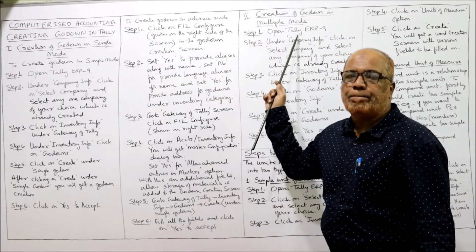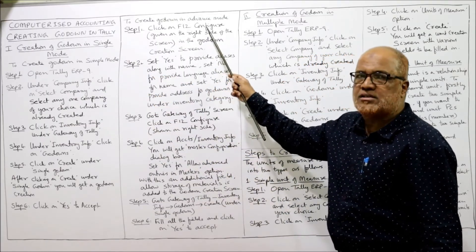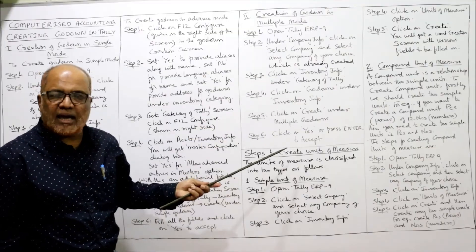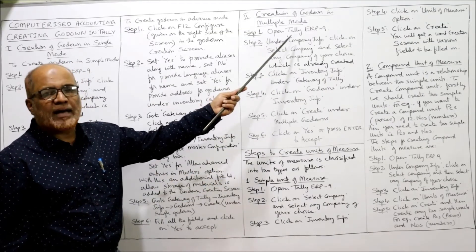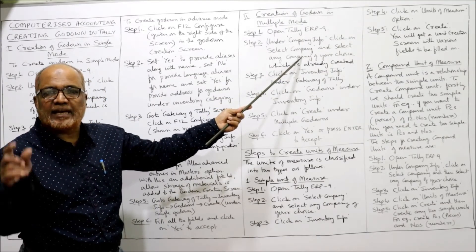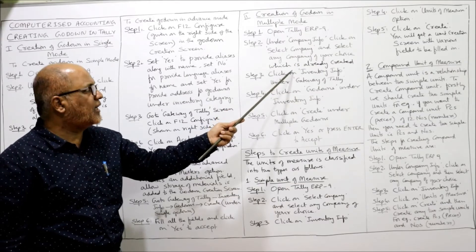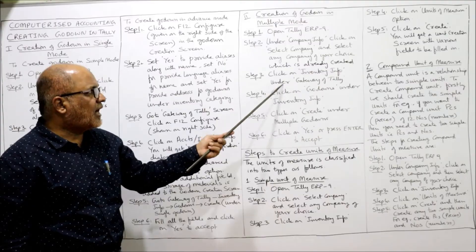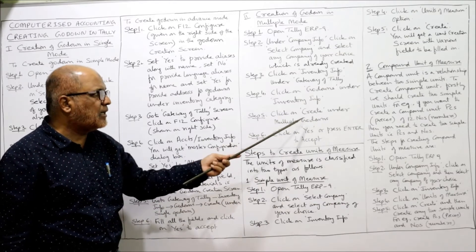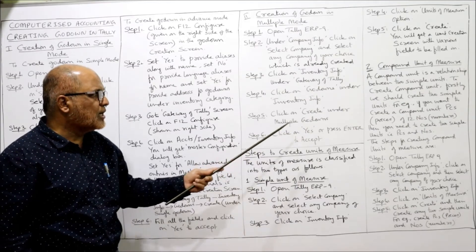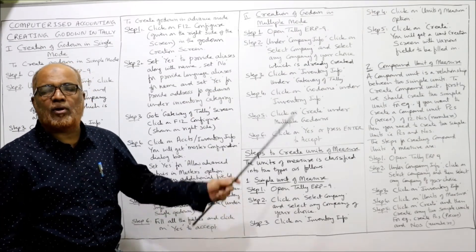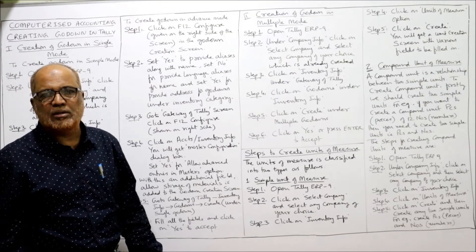Now I'm coming to the multiple mode — creation of a godown in multiple mode. There are again six steps. Step 1: Open Tally ERP 9 as usual. Step 2: Under Company Info, click Select Company and select the company of your choice, which should already be created. Step 3: Click on Inventory Info. Step 4: Under Gateway of Tally, click on Godowns. Step 5: Click on Create under Multiple Godowns. Step 6: Click Yes or press Enter to accept.